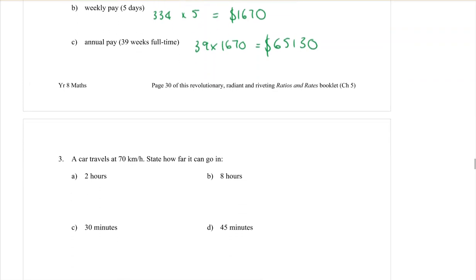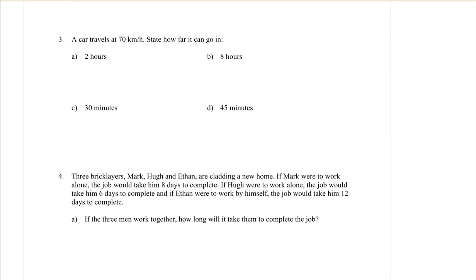Next page. A car travels at 70 kilometers per hour and speed is a very popular rate that we like to use. How far can it go in two hours? So remember, this is what we call a unitary method. That 70 kilometers is for one hour. So if I want to do two hours, I just have to times that 70 by two, which is going to be 140 kilometers. It's telling how far I'm going to go, which is in kilometers. If I'm going to travel for eight hours, I'm going to times the 70 by eight, which is 560 kilometers.